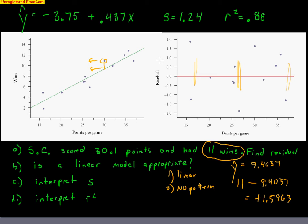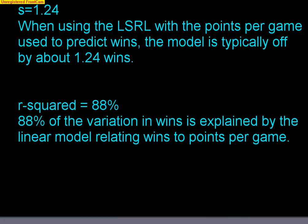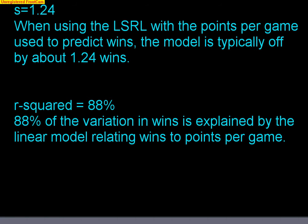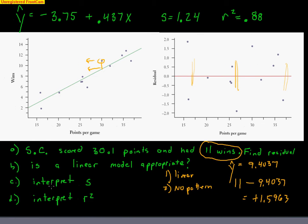Interpret the value for S. The S value is 1.24. When using the least squares regression line with points per game to predict wins, the model is typically off by about 1.24 wins. S measures how far a typical point is from the line, so our model is usually off by 1.24 wins — that's measured in the same units as the Y variable. Whether that's good or bad depends on context; with only 12 to 13 games played per year, being off by 1.24 wins could be considered quite a bit.